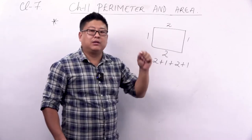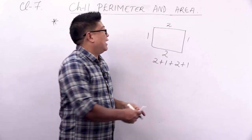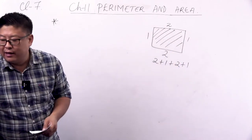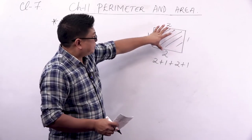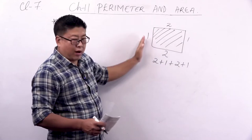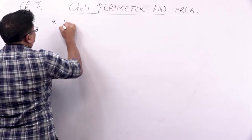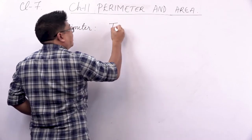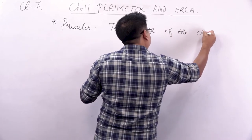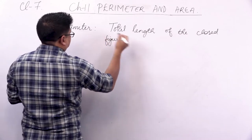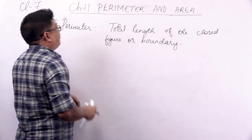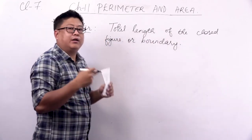In this chapter we're going to learn about different formulae for different figures. Perimeter simply means the total length of the closed figure or the boundary. For example, if it is a square with sides 2, 2, 2, 2 — if you add all the sides you will get the perimeter. Perimeter simply means the total length.